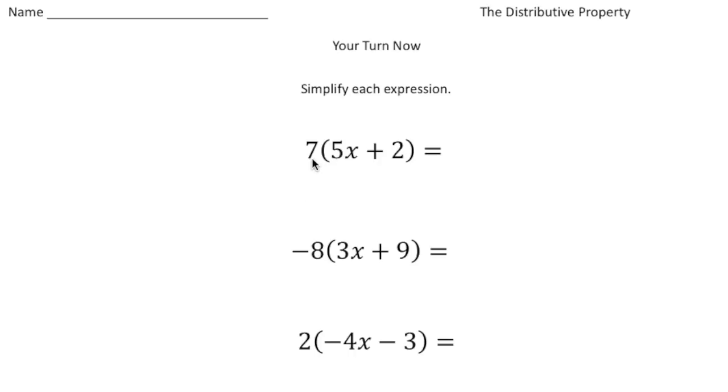So here we have seven groups of 5x plus two. So it's going to be seven times 5x, which is 35x plus seven times two gives us 14. So it's 35x plus 14.